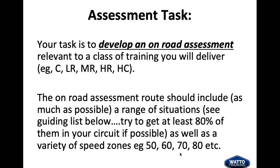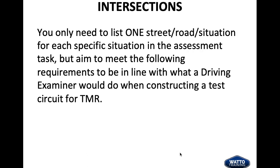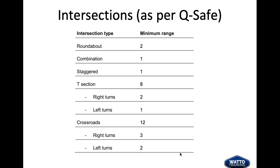The on-road assessment route should include as much as possible a range of situations — see the guiding list below. Try to get at least 80% of them in your circuit if possible, as well as a variety of speed zones: 50, 60, 70, and 80 zones. You only need to list one street or road situation for each specific situation in the assessment task, but aim to meet the following requirements to be in line with what a driver examiner would do when constructing a test circuit for Transport Main Roads.